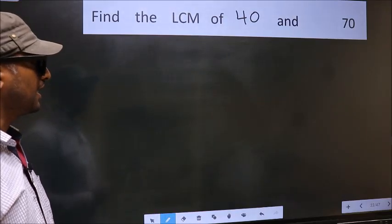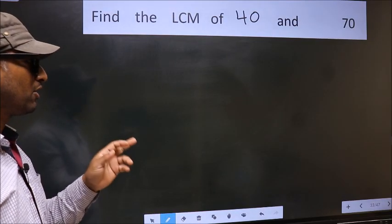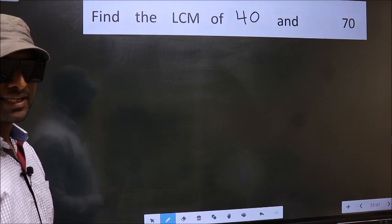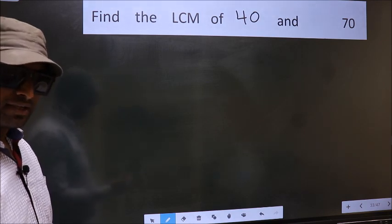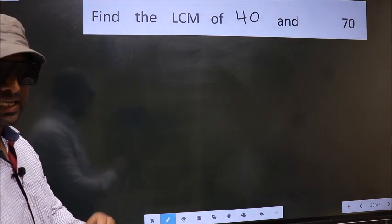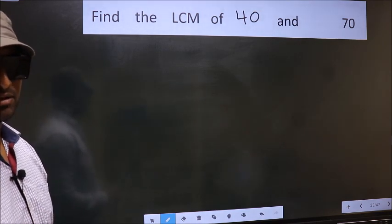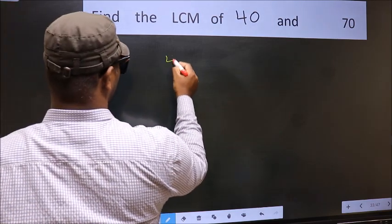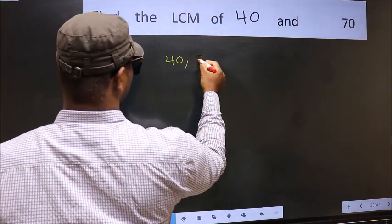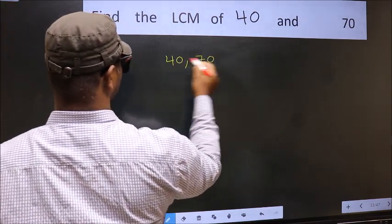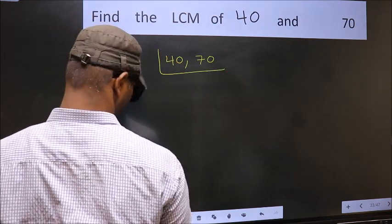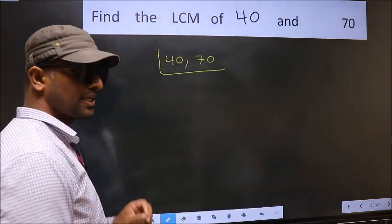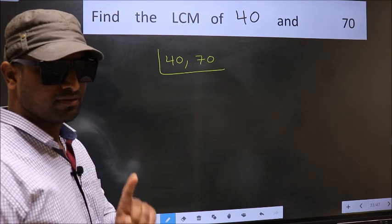Find the LCM of 40 and 70. To find the LCM, first we should frame it in this way: 40 and 70. This is your step 1.